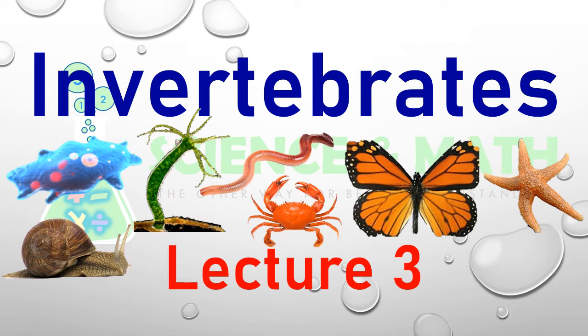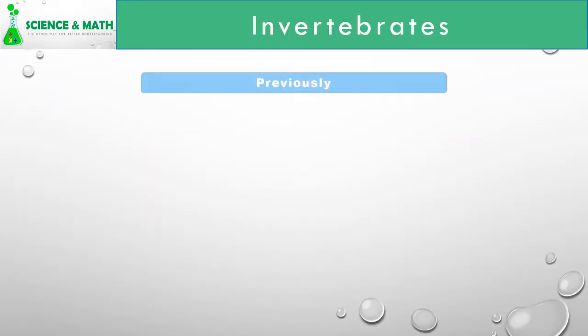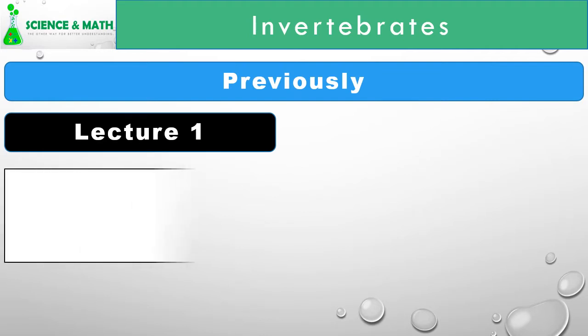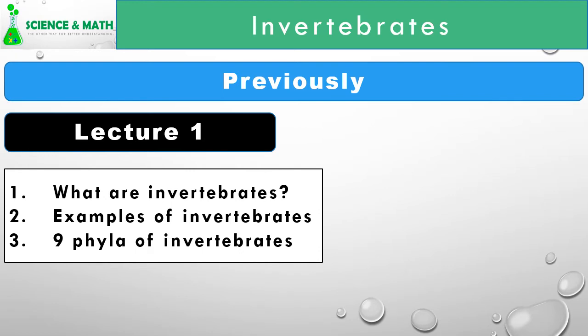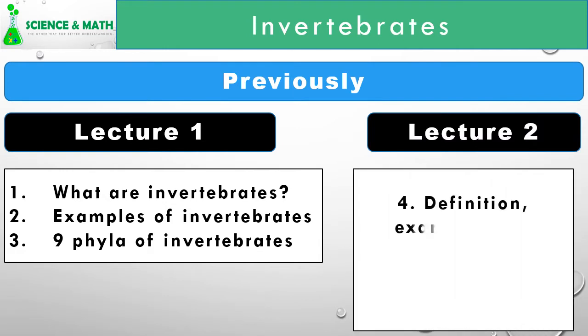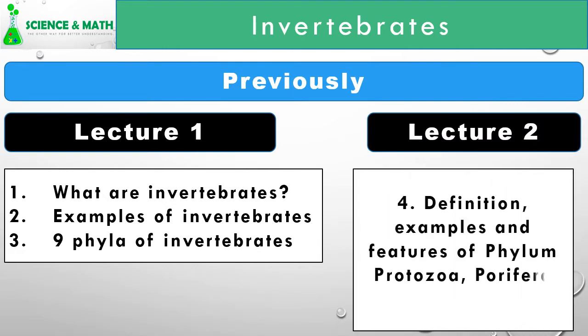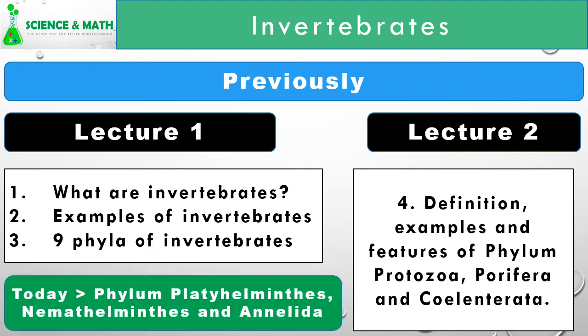Here we are discussing about the invertebrates. In our previous video, we discussed about what are invertebrates, examples of invertebrates, and 9 phyla of invertebrates in Lecture 1. In Lecture 2, we discussed about definition, examples, and the subtypes of Protozoa, Porifera, and Coelenterata. Today, we are going to discuss about Phylum Platyhelminthes, Nematohelminthes, and Annelida.